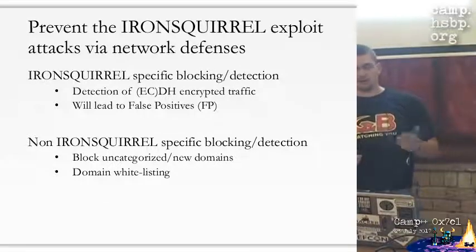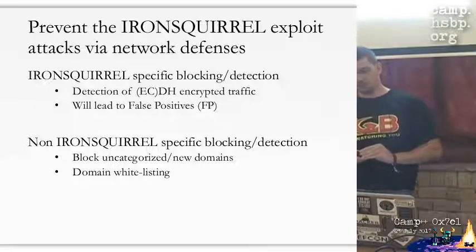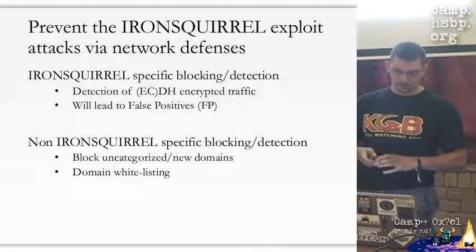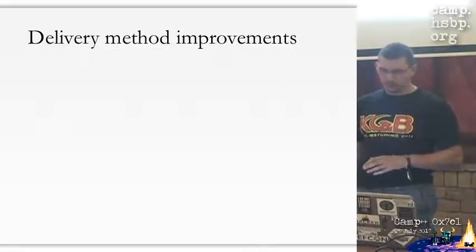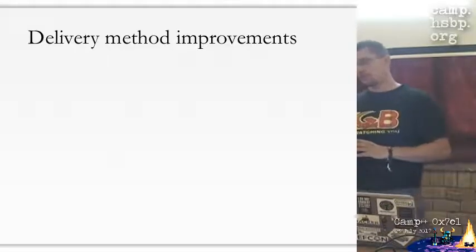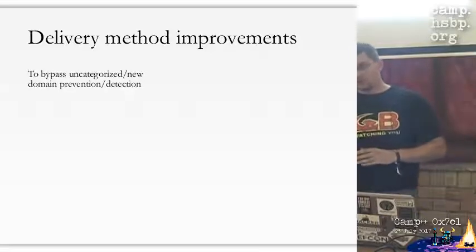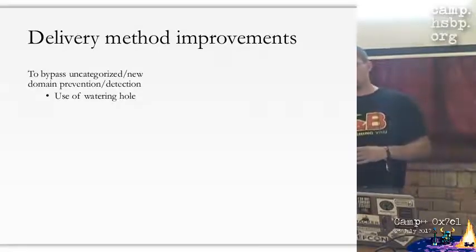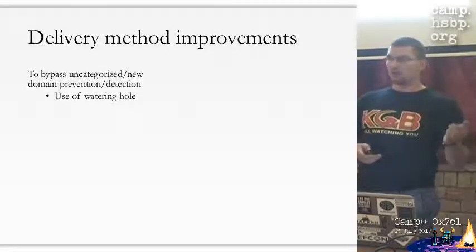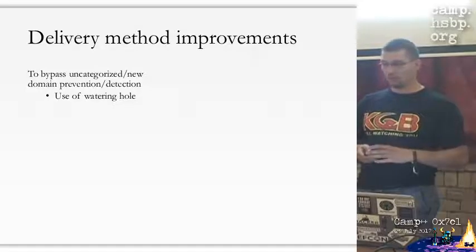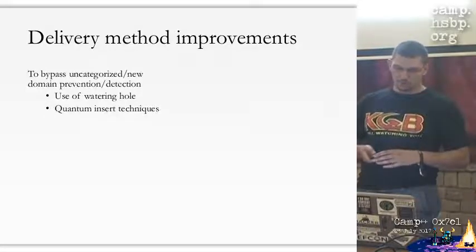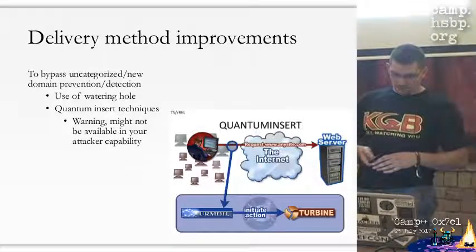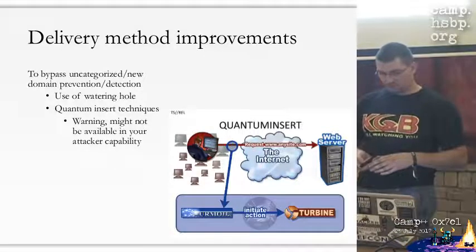There are also non-Iron-Squirrel-specific blocking methods you can use - for example, block access to uncategorized or new domains if you are using a fancy web proxy, or you can use domain whitelisting. But even if defenders use these methods, a very powerful attacker can bypass them. For example, with watering hole attacks you can deploy your code on a website already in the whitelist. Or if you are the NSA and can use quantum insert techniques, nothing can stop you.